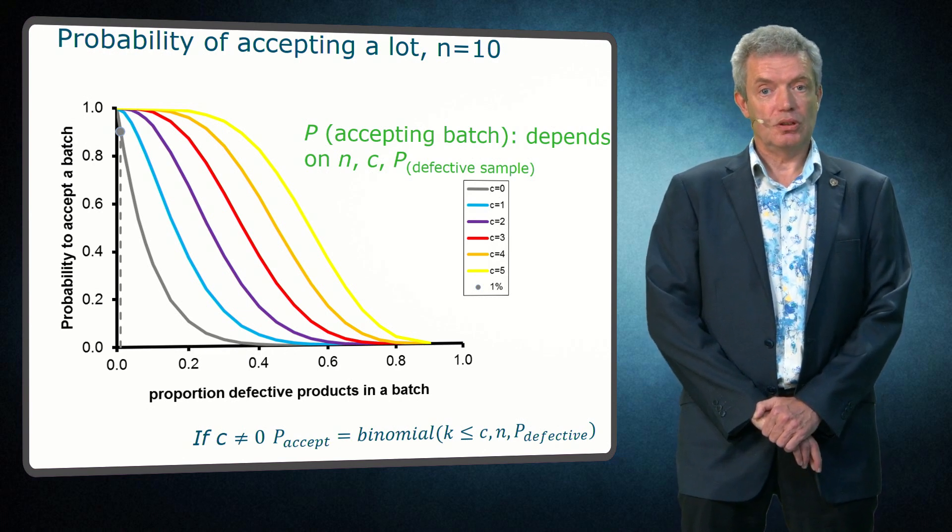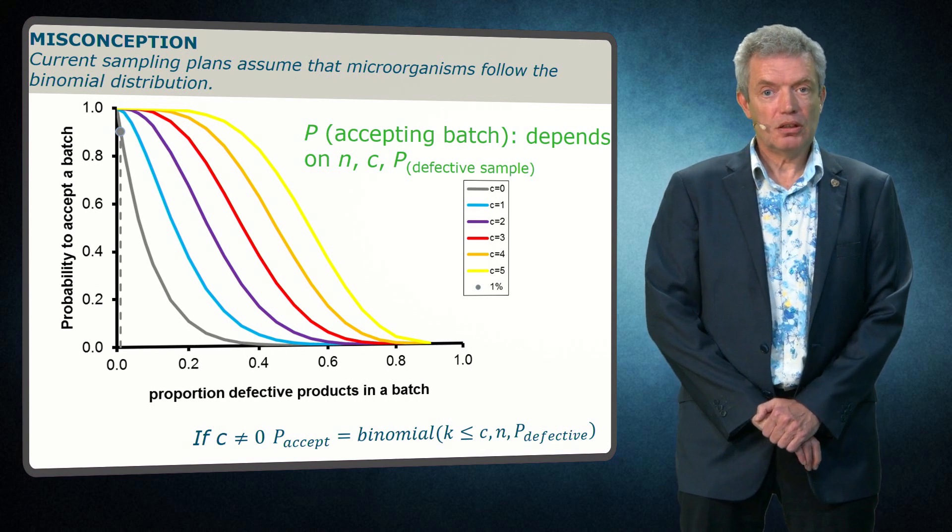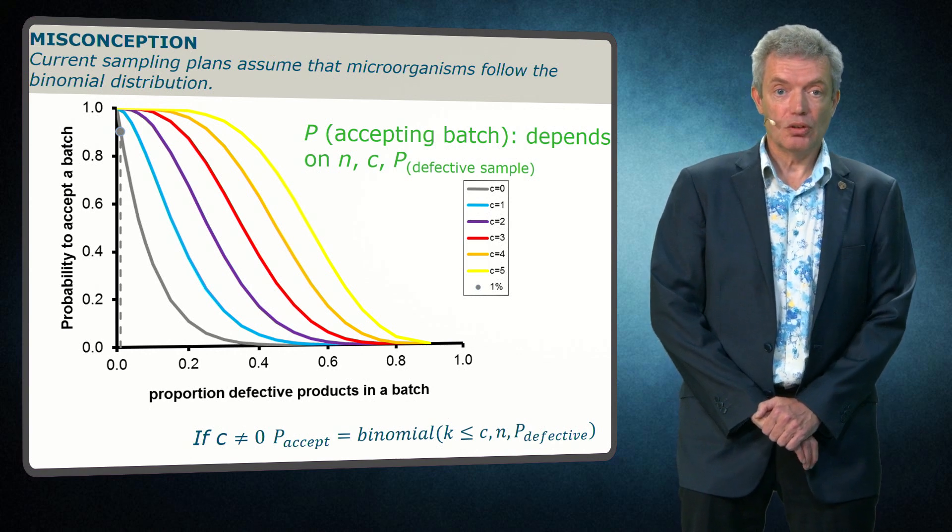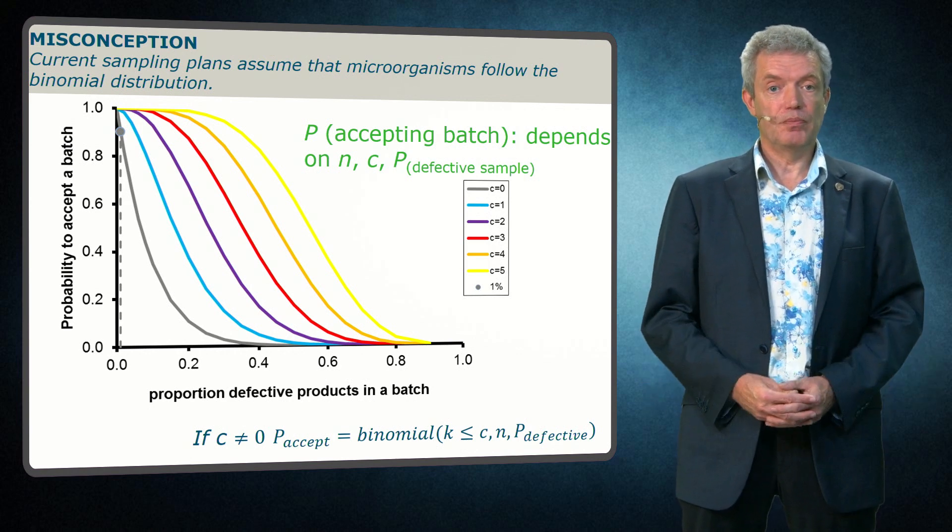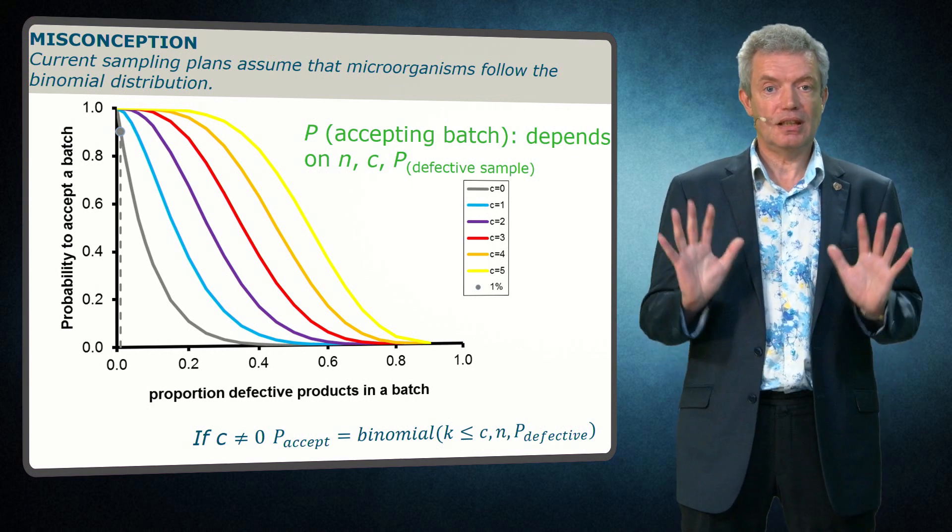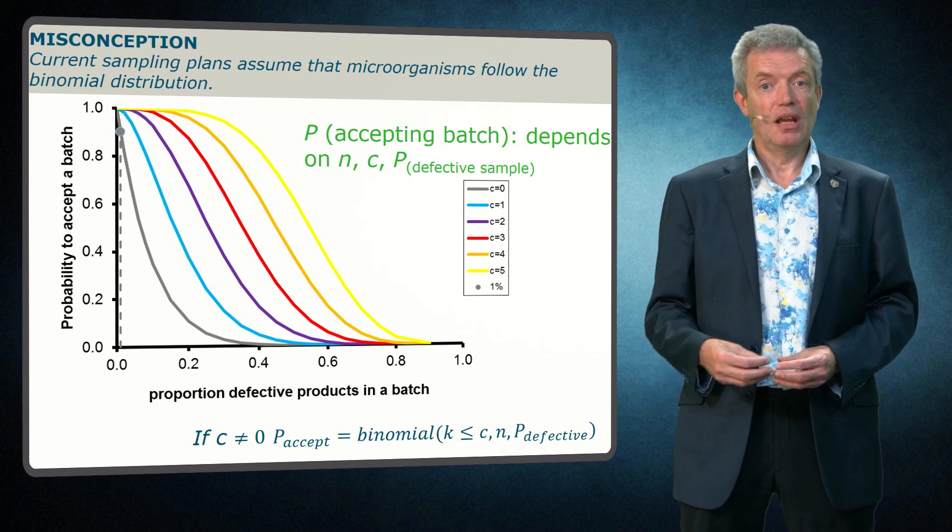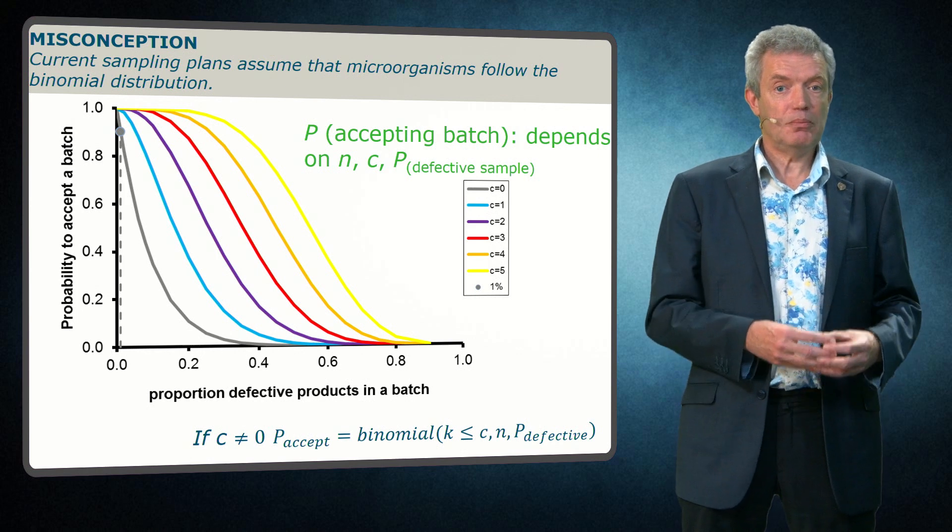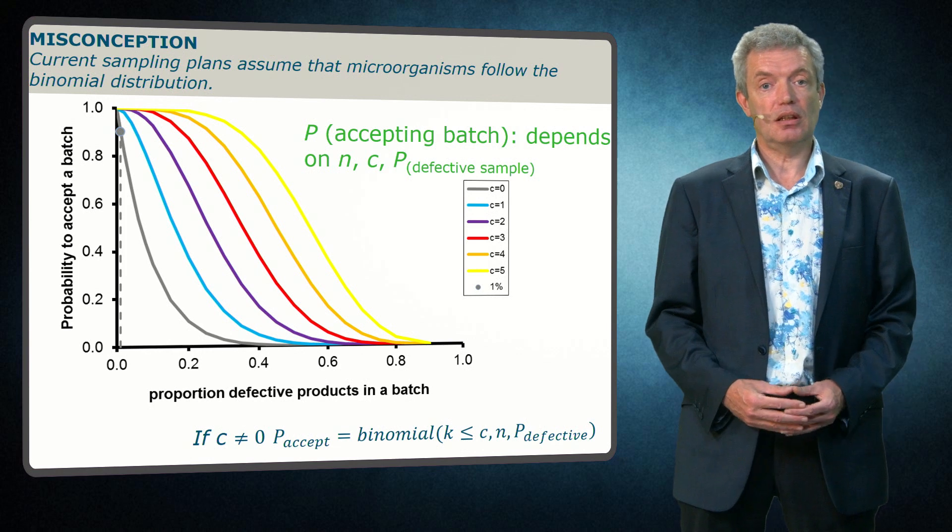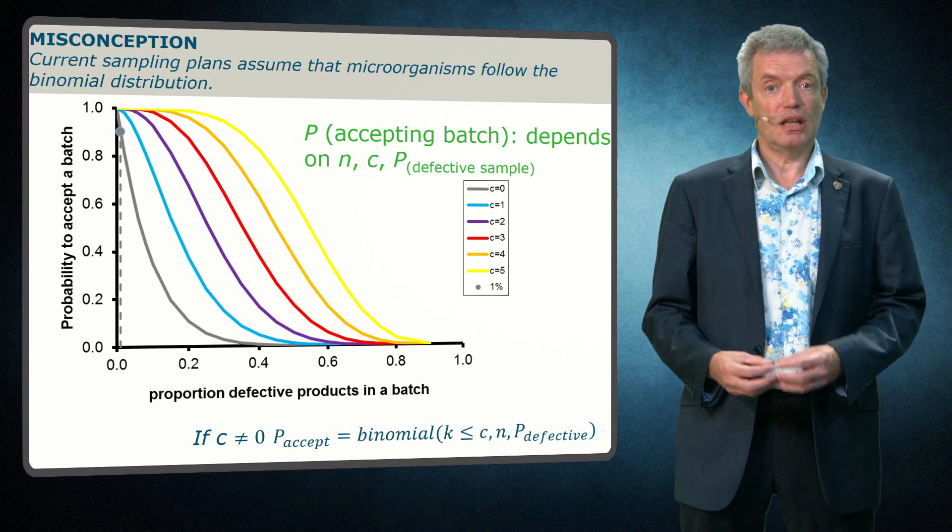And this then results in another misconception. The misconception is that current sampling plans assume that microorganisms follow the binomial distribution. This is not what is assumed. The microorganisms are here homogeneously distributed or randomly. But the results of the 10 samples follow the binomial distribution, since we take 10 samples, each with a certain probability of being defective, and we accept C to be positive, and that process is simply following the binomial theory. So it is not the microorganisms that are then assumed to be binomially distributed, but it is the outcome of the stochastic sampling process.